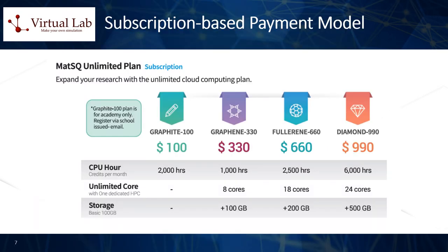In addition to this top-up and pay-as-you-go credit payment mechanism, Materials Square also offers a subscription-based model. In this case, the user pays a fixed monthly subscription according to the different service levels displayed in this slide, which provide various amounts of CPU hours and storage space on the cloud as part of the corresponding bundle package. For more information about such pricing mechanisms and conditions, please refer to the main Materials Square website at www.materialssquare.com.